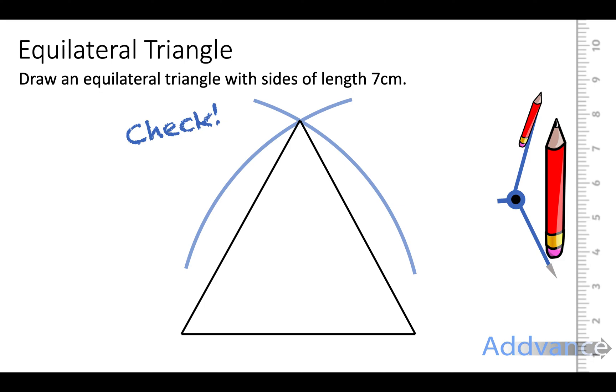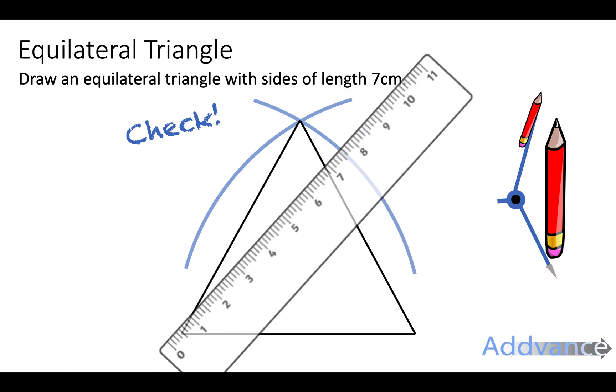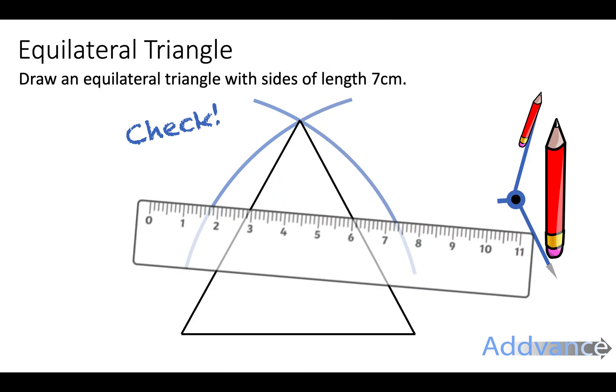You should always check your work. So just take your ruler and measure each of the lengths of the triangle to make sure they're exactly 7cm long.